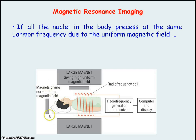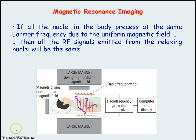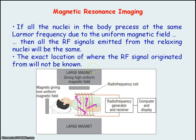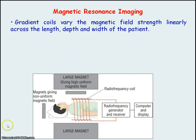If we didn't have the gradient coils, all the nuclei in the body would precess at the same Larmor frequency due to the uniform magnetic field produced by the large superconducting magnet. As a result, all relaxing nuclei would emit the same radio frequency signal, and the receiver coil would pick up these signals, but the exact location where each signal came from would not be known.